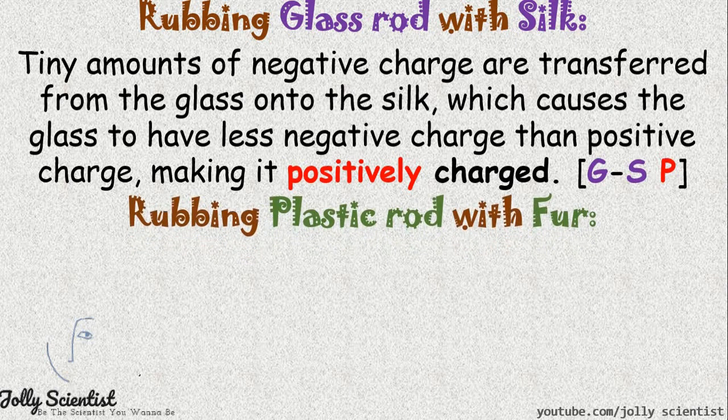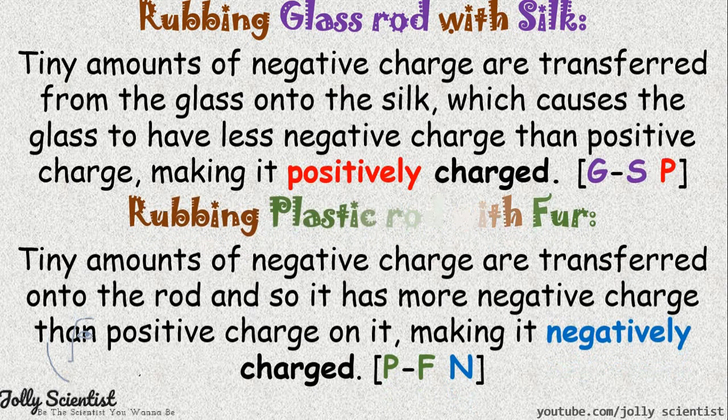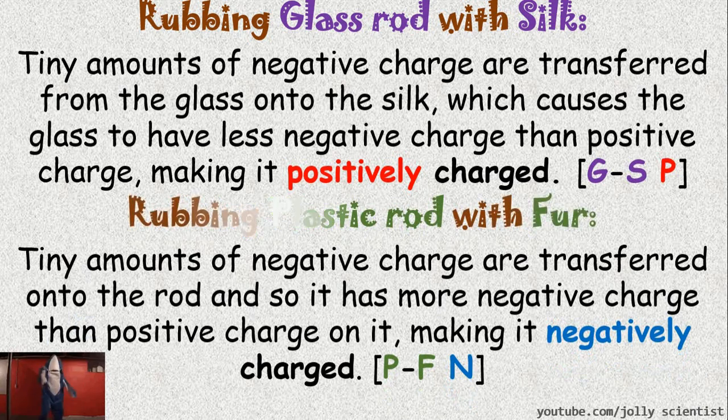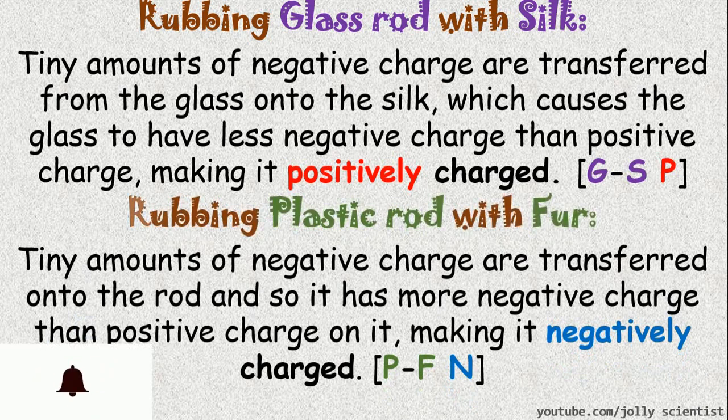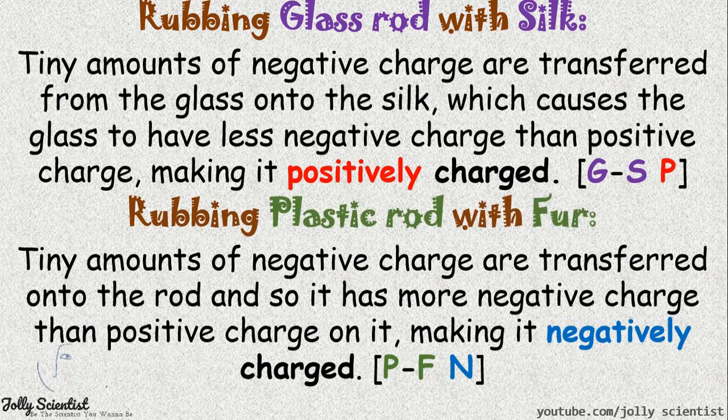How about rubbing a plastic rod with fur? You see tiny amount of the negative charge transferred into the rod and so it has more negative charge than positive charge on it, hence making it negatively charged. So we would say plastic on fur is negative, that is P and F is N.